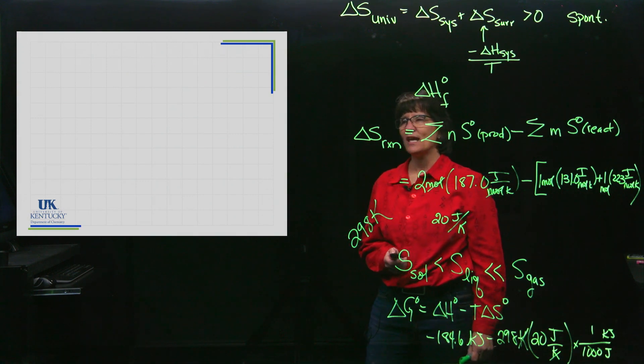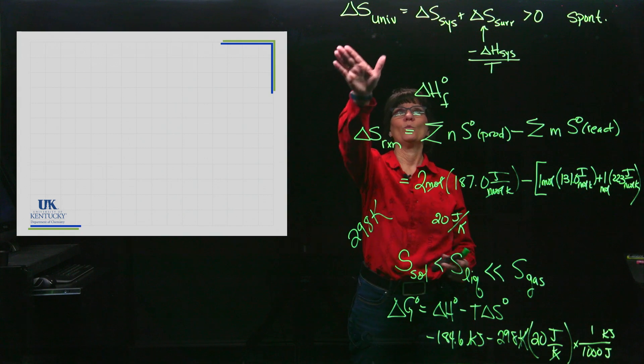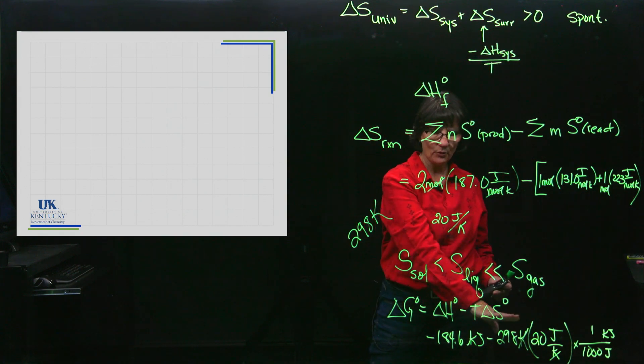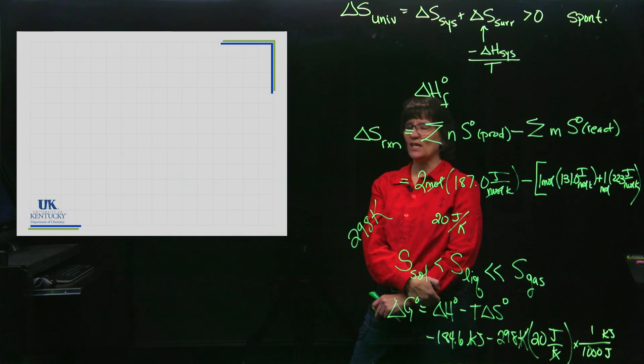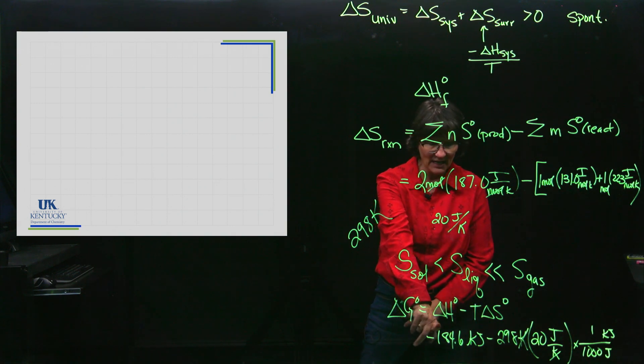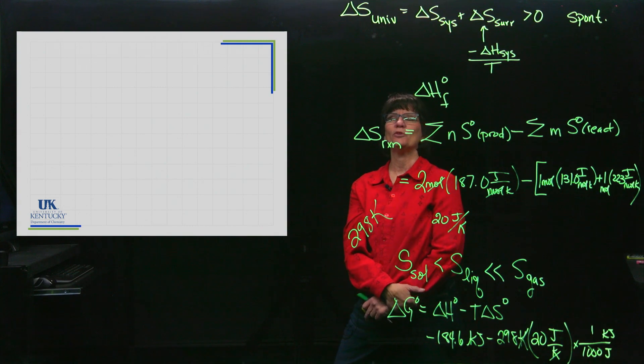We're working our way through understanding whether or not a reaction is spontaneous. We can do it one way, we can do it another way, but we're going to learn another way to calculate ΔG that doesn't involve first having to calculate ΔH and ΔS. That's what we'll do next.